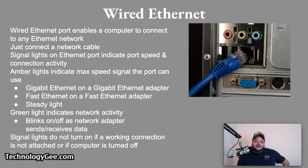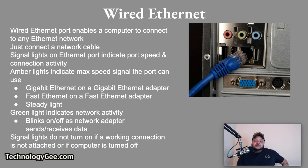A wired Ethernet port enables a computer to connect to any Ethernet network — all a user has to do is connect the network cable and the system will be recognized unless the network is configured to accept only specified devices. When connected via a wired connection, signal lights on the Ethernet port indicate port speed and connection activity. The amber light indicates the maximum speed signal the port can use, presenting a steady light, while the green light indicating network activity will blink on and off as the adapter sends and receives data. The signal lights do not turn on if a working connection is not attached or if the computer is turned off.